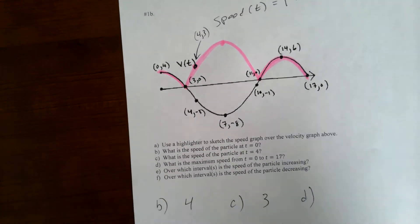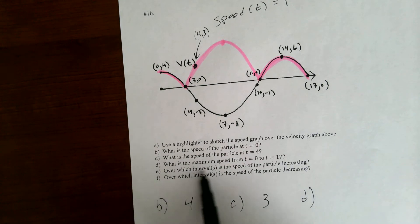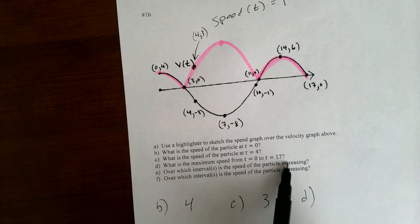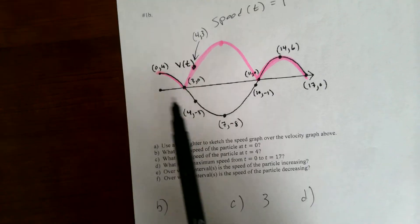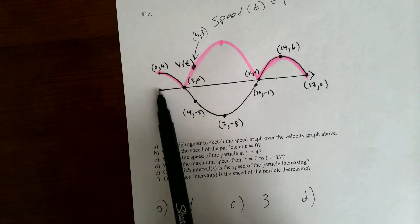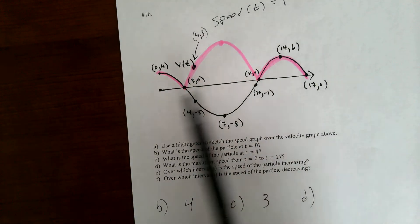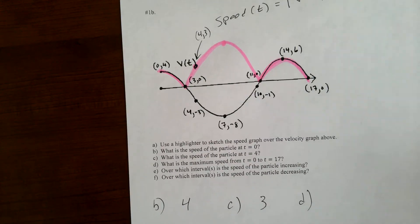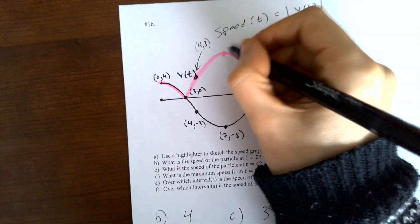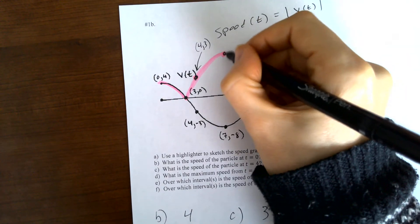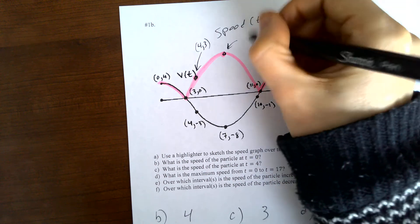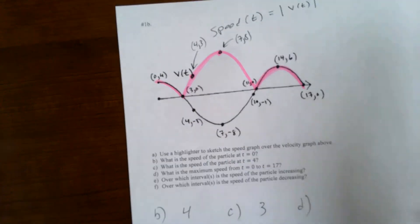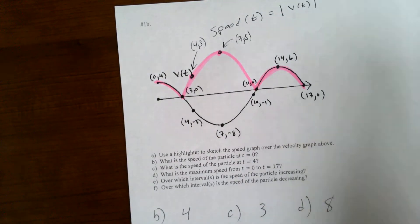And then part d: what is the maximum speed from t equals 0 to t equals 17? So you're looking at the speed graph over this interval, and the maximum speed is occurring right up here at the top point. That top point is (7, 8), so the answer is 8.